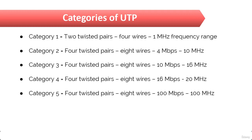Category 5 has four twisted pairs, that is eight wires, used for 100BASE-TX which is two-pair wiring, and is rated for 100 MHz. But why use CAT 5 when you can use CAT 5e for the same price? In fact, you can't even buy plain CAT 5 anymore.